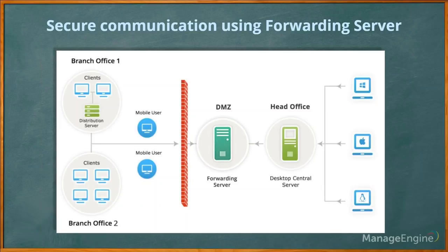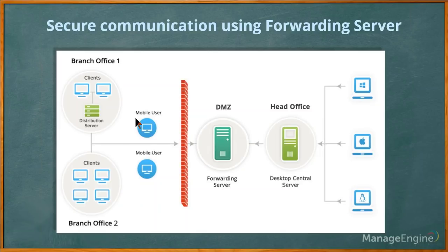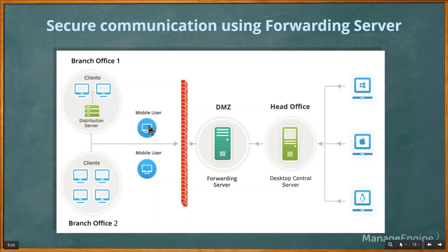When a patch or software task is created, machines in the remote office do not reach the server directly to download patches. Only the distribution server reaches the Desktop Central server to download the patches, then distributes them to machines in the remote office. This feature helps you manage bandwidth efficiently.